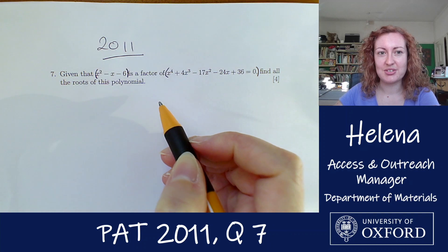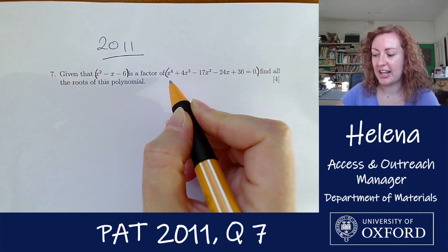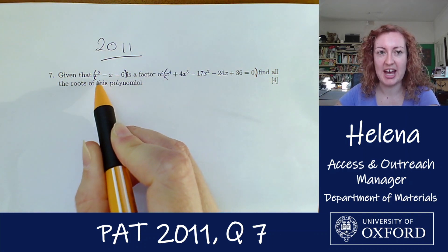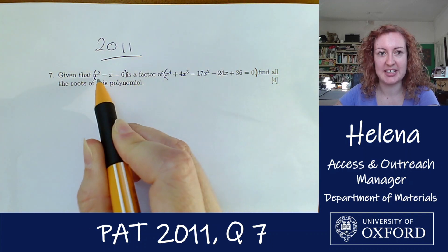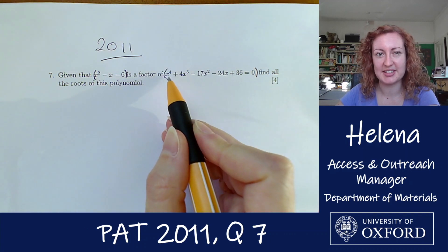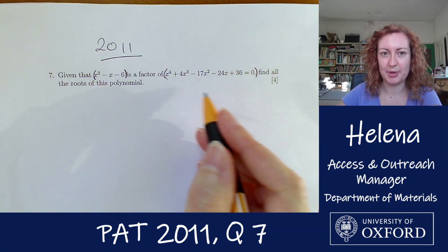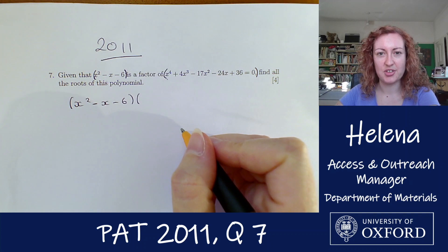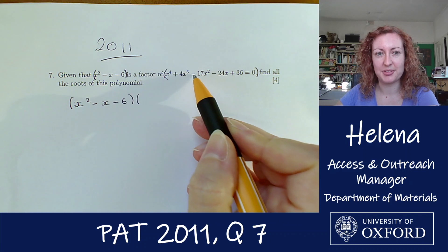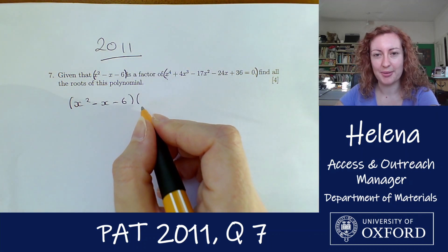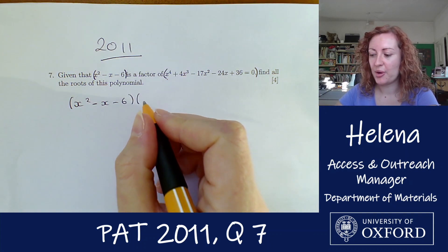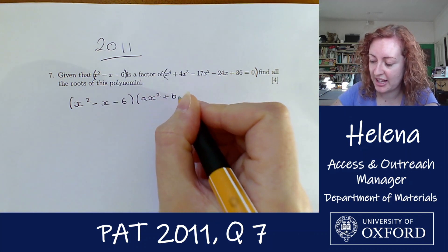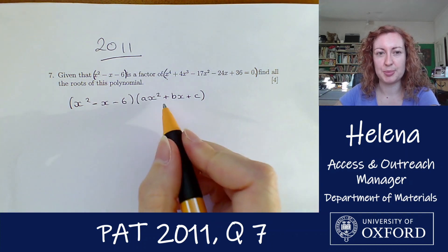We still need to find the other two roots, so we need to figure out what we can multiply this quadratic by to get the full polynomial. To get x to the four, we'll need another quadratic — x squared times x squared. Rather than puzzling it out directly, we'll substitute a generic quadratic ax squared plus bx plus c, multiply it out, and compare coefficients.